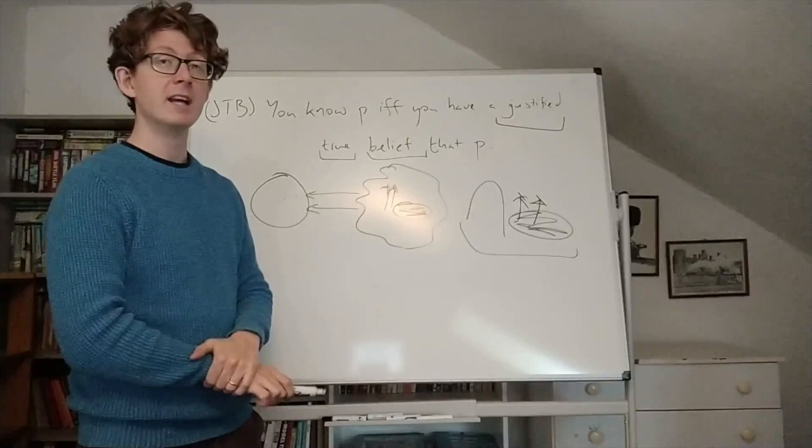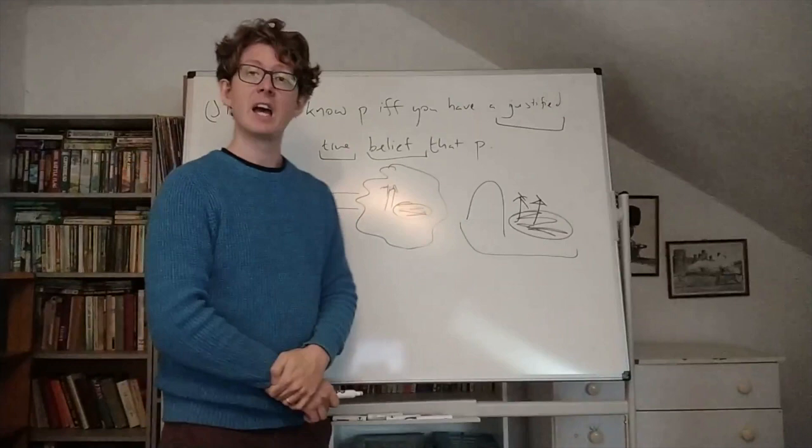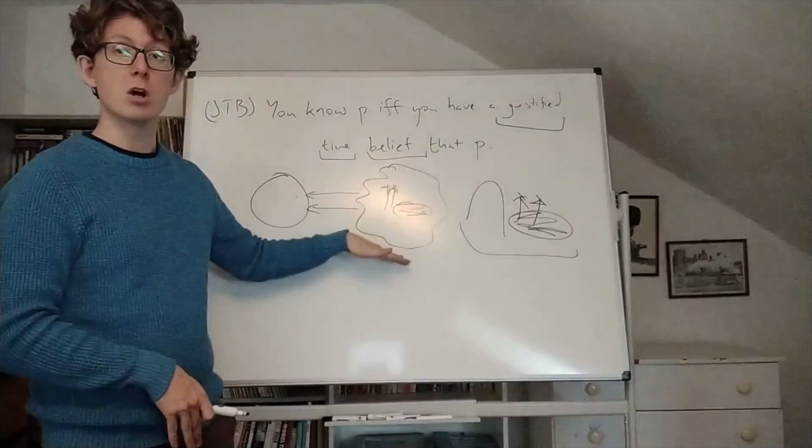So according to the justified true belief theory, this is indeed an example where I know there's an oasis in the distance. But let's think about our intuitions now. What do our intuitions actually say about this case? And I think it's pretty obvious that we want to say that you don't actually know. In spite of what the theory predicts, you don't know in this case that there is an oasis in the distance.